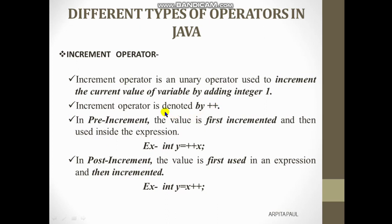There are two types of increment operator: pre-increment and post-increment. In case of pre-increment, the value is first incremented and then used inside the expression. For example, int y = ++x — so the value of x will be incremented first and then used in the expression.